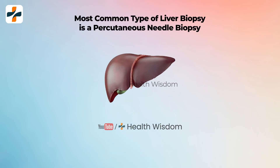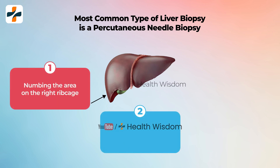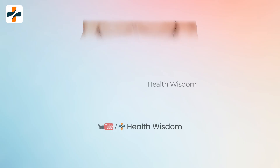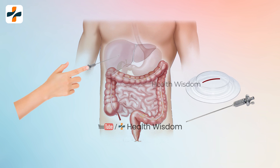The most common type of liver biopsy is a percutaneous needle biopsy. The steps include: numbing the area on the right ribcage, making a small cut, and inserting a thin needle between the ribs to remove a tissue sample. A liver biopsy is a procedure to remove a small piece of liver tissue so it can be examined in a lab under a microscope for signs of damage or disease.